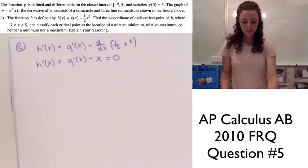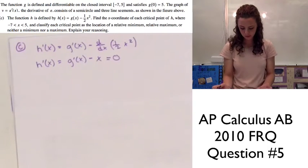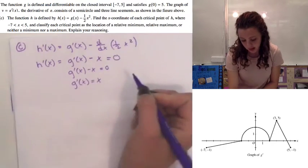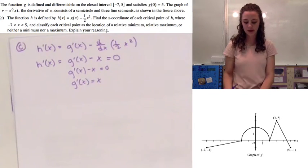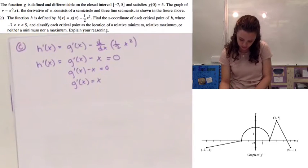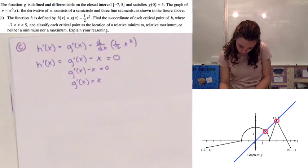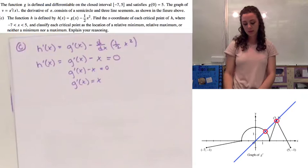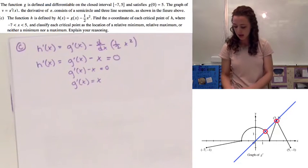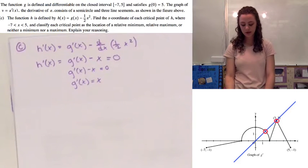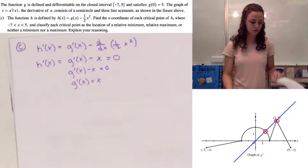Setting h prime of x equal to 0 means g prime of x minus x equals 0, so g prime of x equals x. This is equivalent to finding where the graph of g prime of x intersects the line y equals x. If we graph this line, the critical numbers will be where g prime of x intersects with this line.